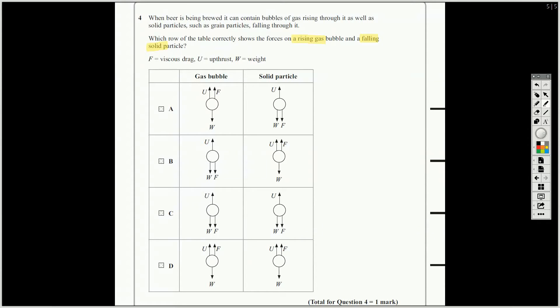So, if the gas bubble is rising, meaning the weight of the gas is downwards, and the viscous drag, F, is going to also be downwards, because going up, this solid particle is falling, the weight is downwards, that's okay. Up thrust is always up, and it is up in all of them.